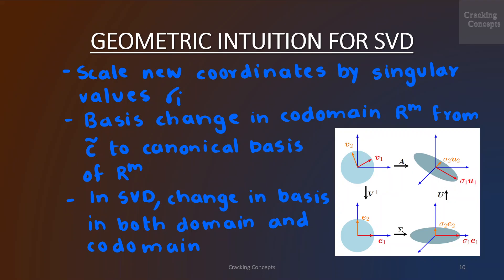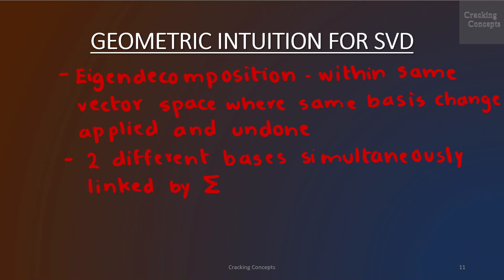SVD expresses a change of basis in both the domain and codomain. This is in contrast with the eigendecomposition that operates within the same vector space where the same basis change is applied and then undone. What makes the SVD special is that the two different bases are simultaneously linked by the singular value matrix Σ.